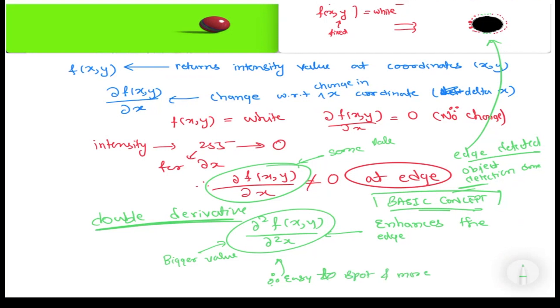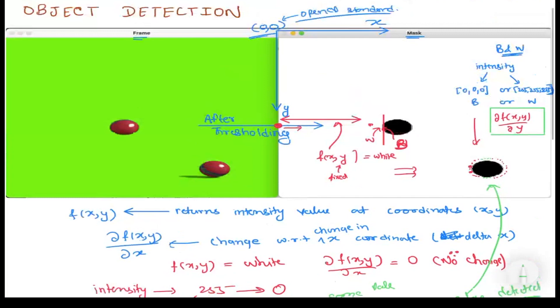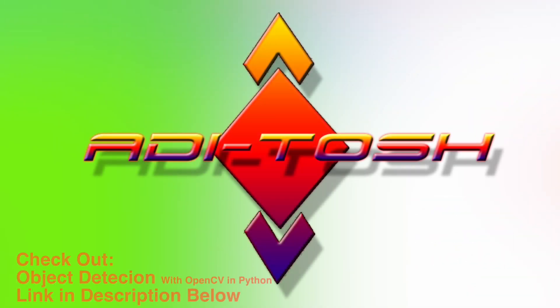With that we are done with the basic concept of object detection in image processing. In OpenCV, object detection is done using contours — what they are, how they relate to this concept, and why they are more efficient is something you can look up online. Thank you for watching — give it a thumbs up if you liked it, share it with friends learning image processing, and have a great day.